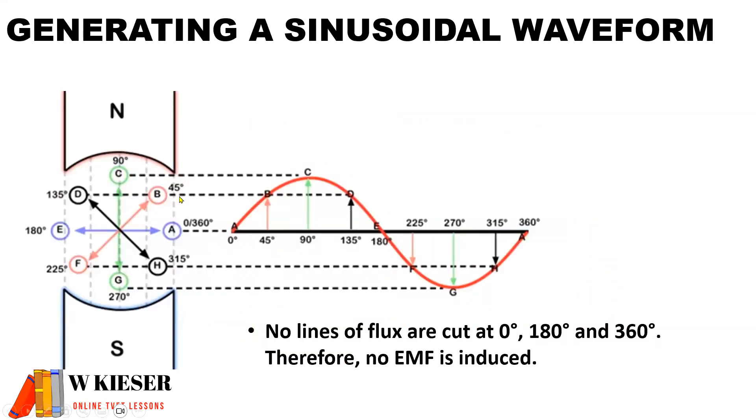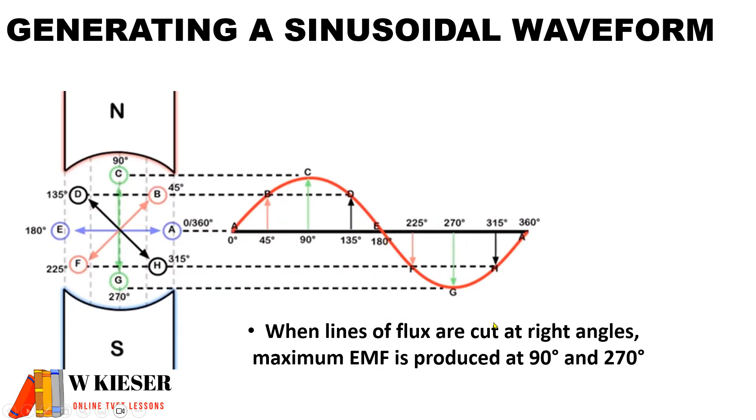As the coil rotates 360 degrees, what we find is that no lines of flux are cut at 0 degrees, 180 degrees, and 360 degrees. In other words, there is no EMF generated at 0 degrees, 180 degrees, and 360 degrees. However, when lines of flux are cut at right angles, maximum EMF is produced at 90 degrees in the positive half cycle and 270 degrees in the negative half cycle.